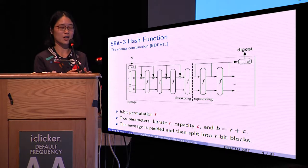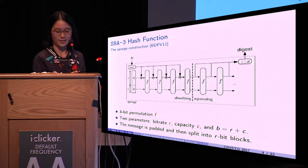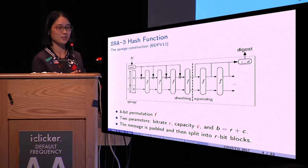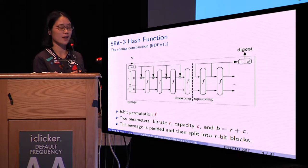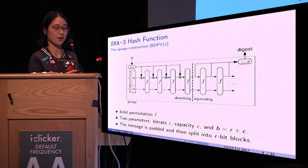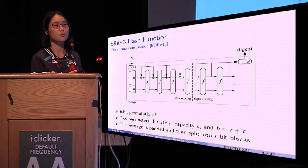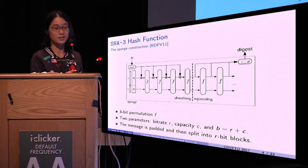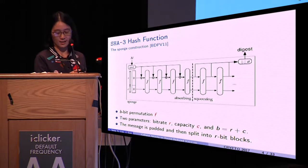KECCAK adopts the sponge construction, a framework for constructing hash functions from permutations. It uses a b-bit underlying permutation F with two parameters: rate r and capacity c, where the sum of r and c equals b.